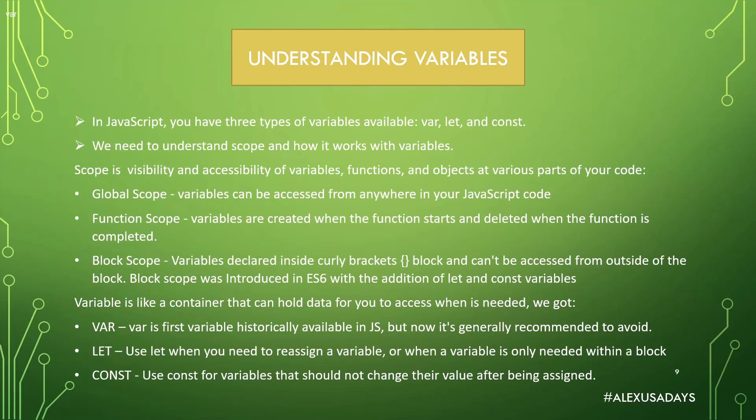Then there's block scope, so variables declared inside curly brackets block and can be accessed from outside of the block. Block scope was introduced in ES6, an updated version of JavaScript that everyone uses now, with the addition of let and const variables. So let and const are newer variables, and var is an older one.